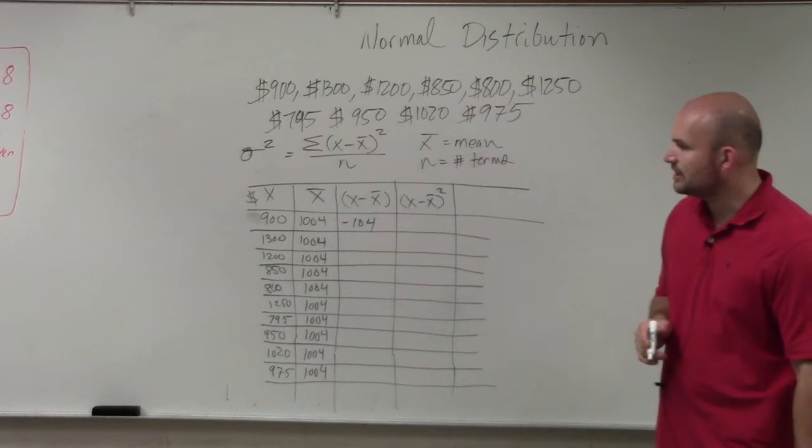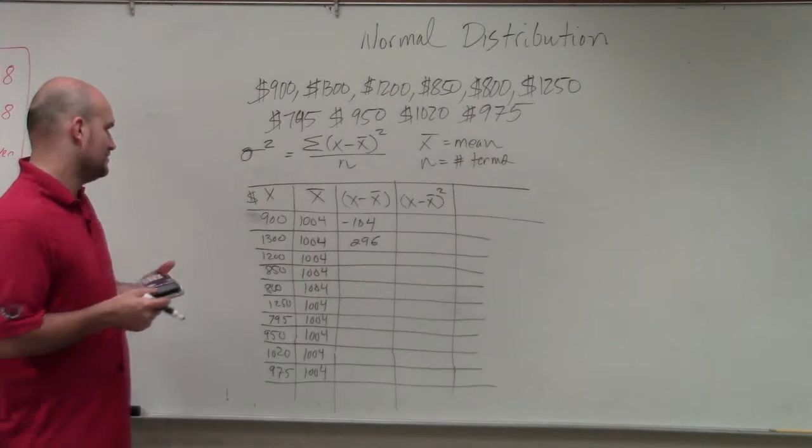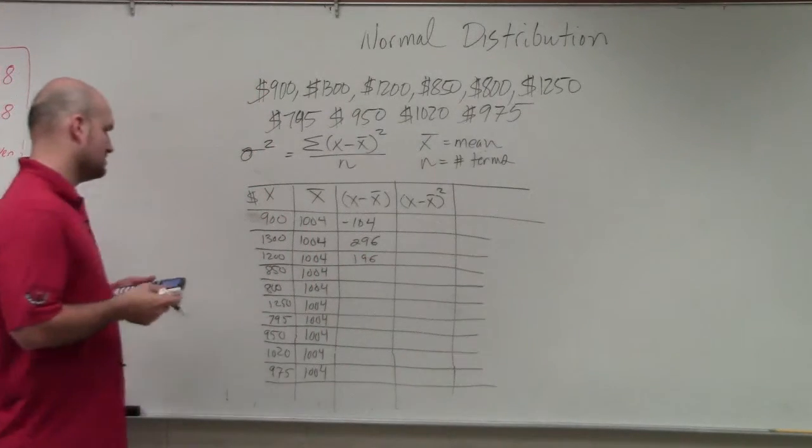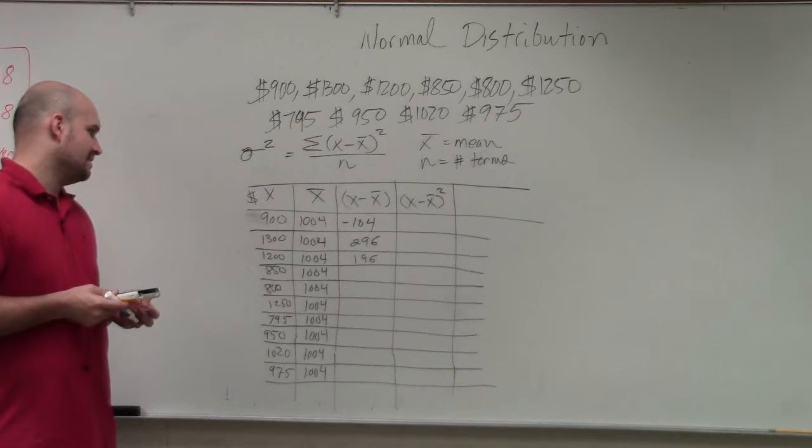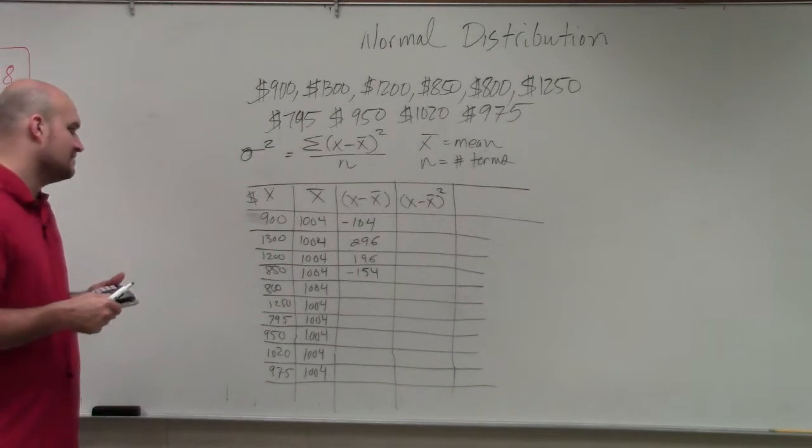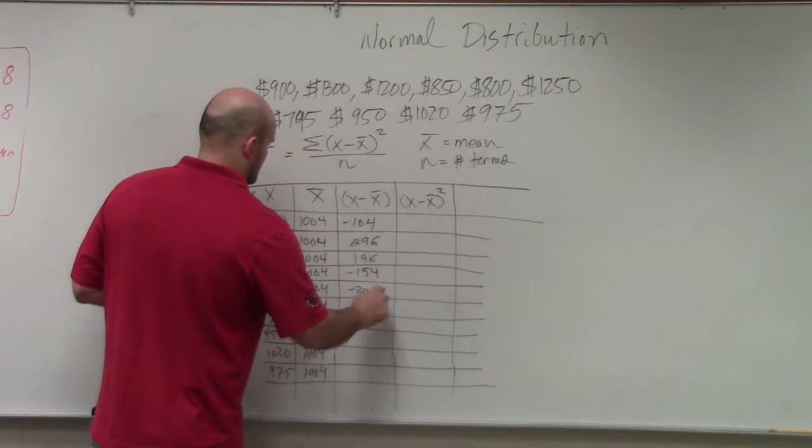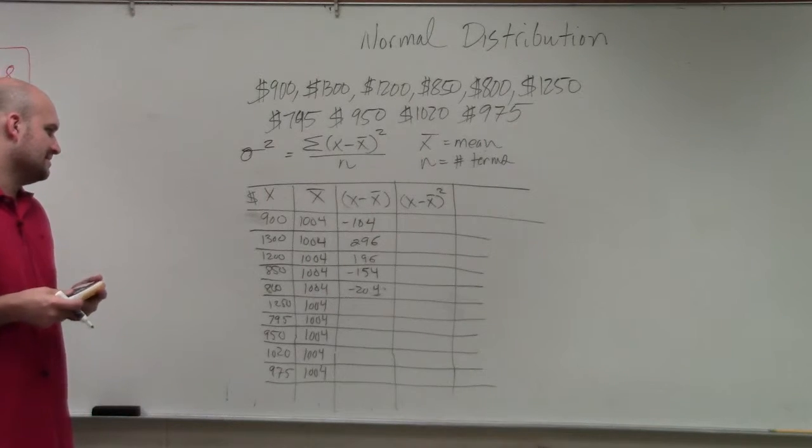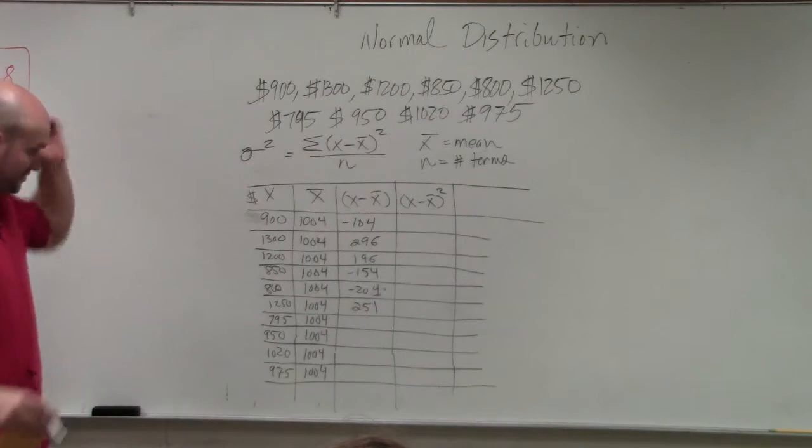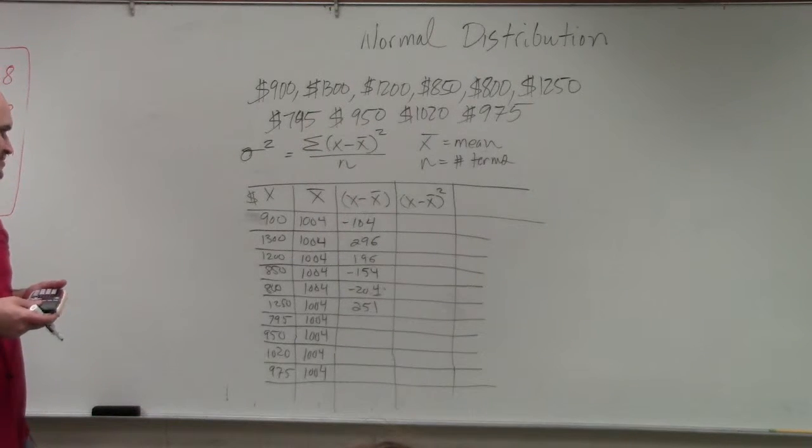This one would be 296. This value is going to be 196. This next one is going to be 154, negative 154. This one would be negative 204. This one is going to be 251. This value is going to be 5,9, so it's going to be 209.